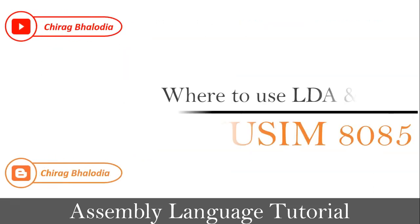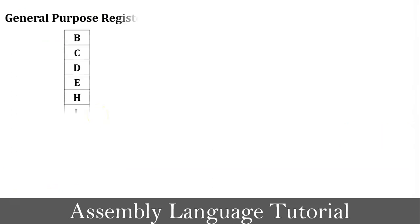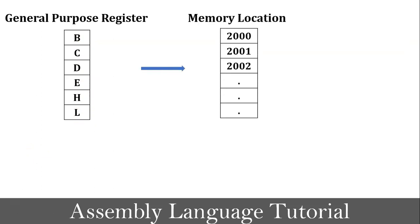The next topic is where to use LDA and STA instruction in programming. We all know that there are 6 general purpose registers in microprocessor 8085: register B, C, D, E, H, and L. If you want to copy or store a value from a register to a particular memory location, or from a memory location to a register, you cannot exchange the value directly between a general purpose register and a memory location.